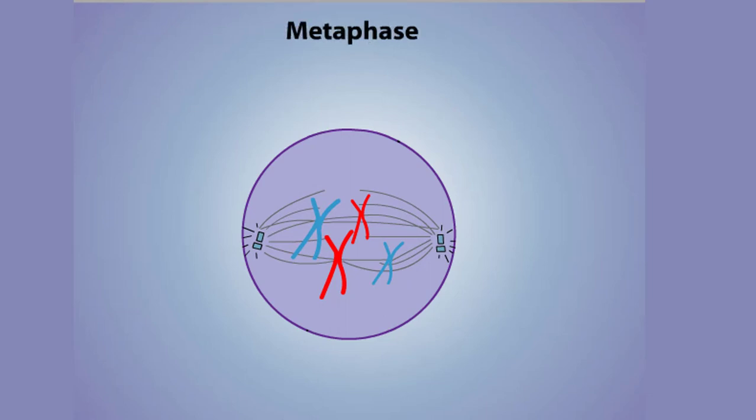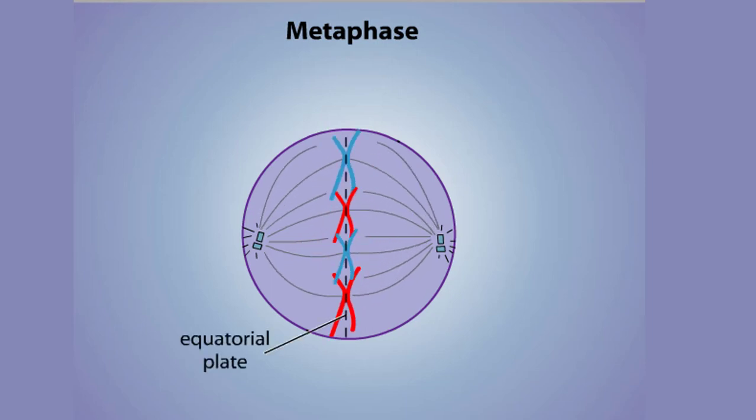In metaphase, the centromere regions connecting paired chromatids become aligned in a plane at the cell's equator.